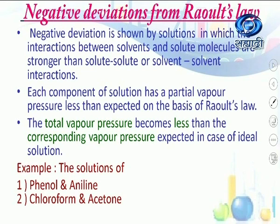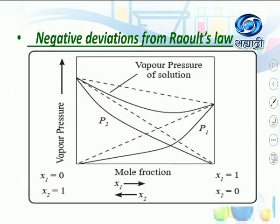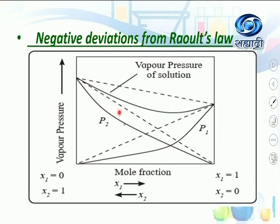Let us discuss the graph for negative deviation. When X1 = 0, X2 = 1; when X1 = 1, X2 = 0. The dotted line represents the ideal solution, and the curve for a solution showing negative deviation lies below the ideal dotted line — both for the individual component curves and for the total pressure curve.